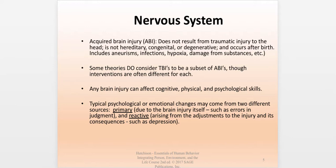The textbook also describes acquired brain injury, or ABI — it does not result from traumatic injury to the head, but rather is something hereditary, congenital, or degenerative, occurring after birth. These include aneurysms, strokes, infections, denial of oxygen (hypoxia), and damage from substance abuse. Some theories consider TBIs a subset of acquired brain injuries, and interventions are different for each type. If this comes up on a test, you'd want to say TBIs and ABIs are different, though many experts consider TBIs a subset of ABIs.